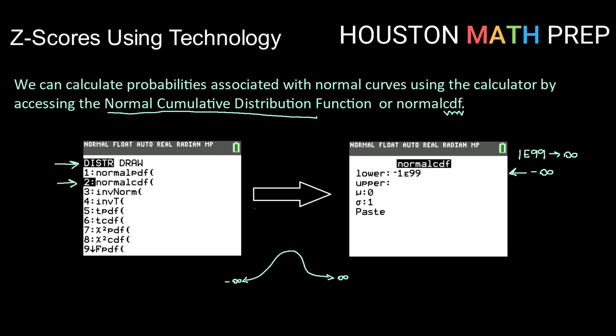Also, your calculator defaults to working with the standard normal curve, mu equals 0, sigma equals 1. However, you can change those values to work with any normal curve.